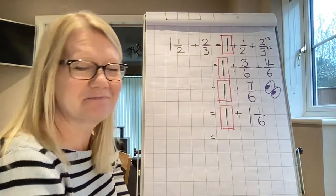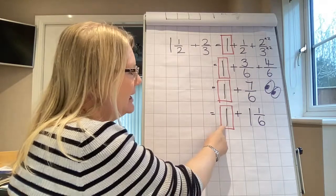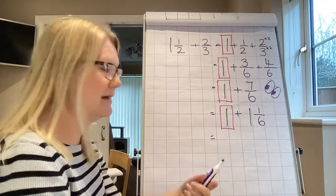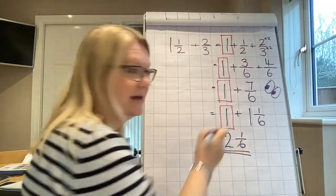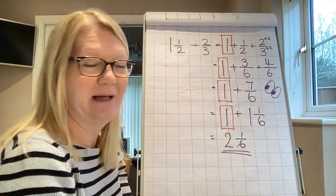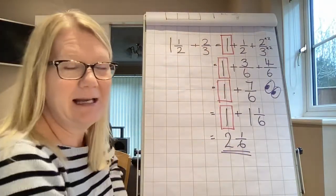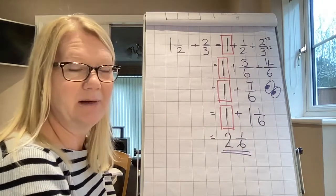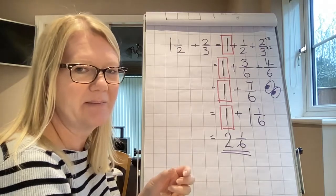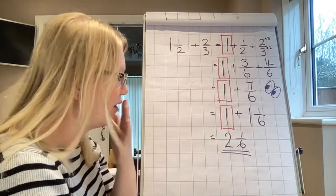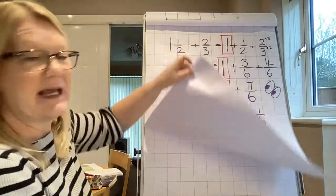Okay. So we're almost there. All we need to do now is bring this one back into play, add it on. If I've got one and a sixth and I add another one, I'm going to have two and a sixth. And that would be my answer. Now, there are quite a few steps and it's really important that you're methodical about your workings because it's really easy just to miss a bit or slip up somewhere. So be really methodical. I'm going to do one more example because I know these can be tricky.